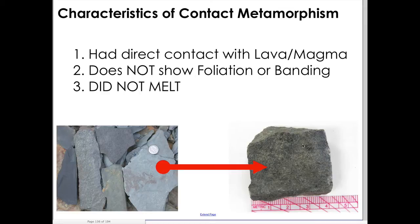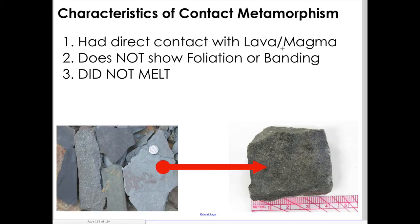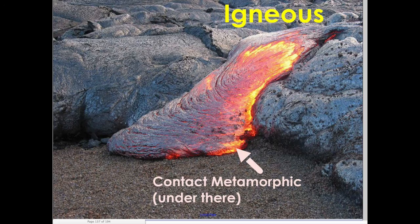Contact metamorphism doesn't have as clear a defined pattern. Here's a rock before metamorphism and here's a rock after contact metamorphism — almost impossible to see a difference. But the rules are: it had direct contact with lava, it does not show foliation or banding, and it absolutely did not melt. Here's an example of lava pouring out of a volcano; somewhere underneath it the intense heat is causing contact metamorphism.